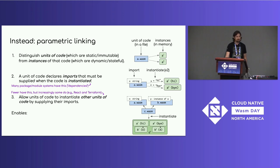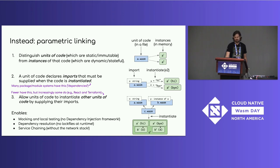While many module and package systems have imports, fewer have this ability for code to instantiate other code — though increasingly some do, like React components or Terraform parameterized modules. What this enables concretely includes mocking and local testing without a dependency injection framework, dependency resolution without lock files at runtime, and service chaining without an intervening network stack.